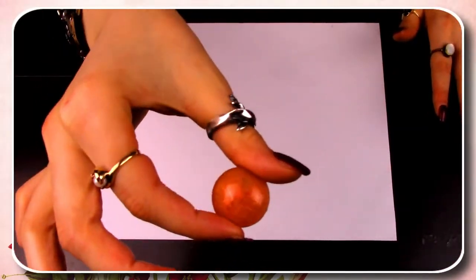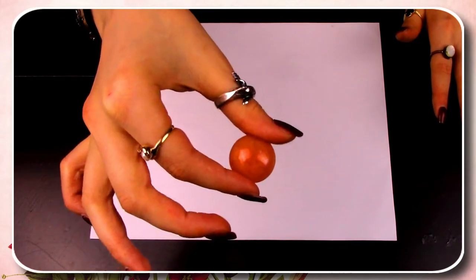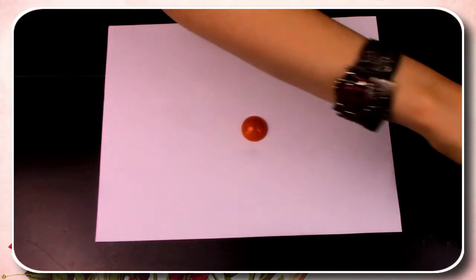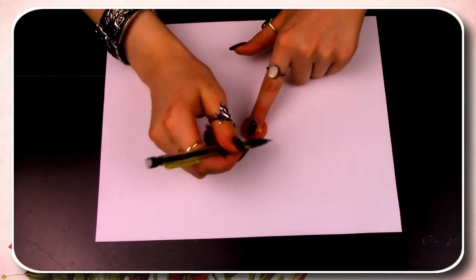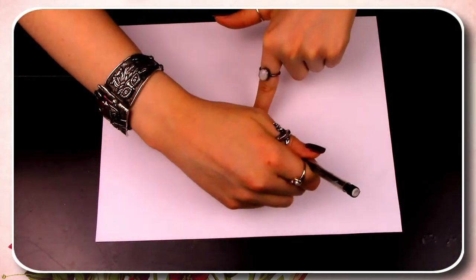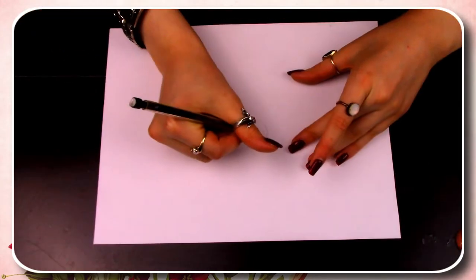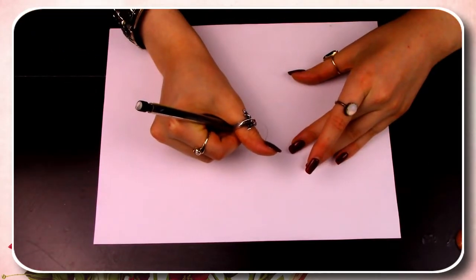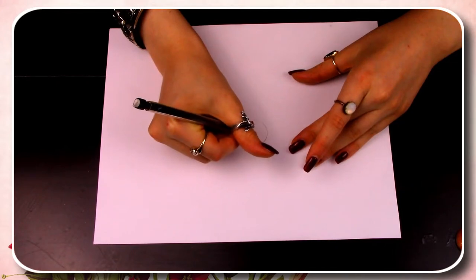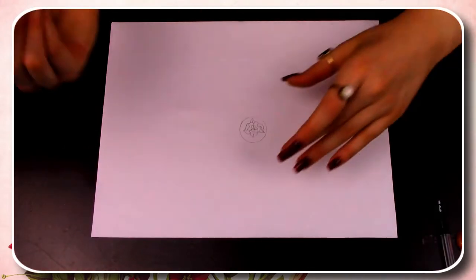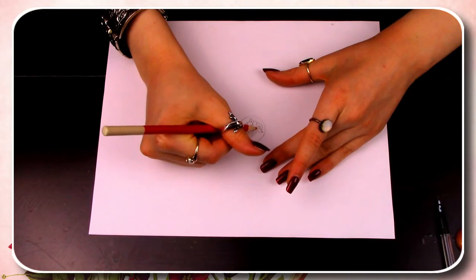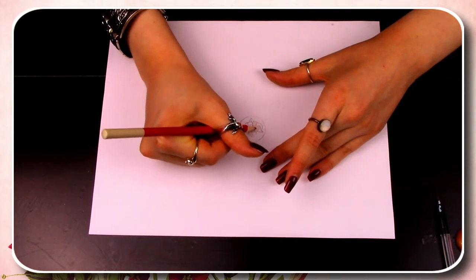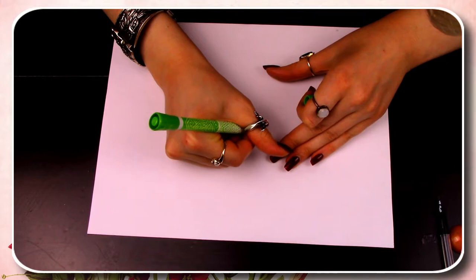First thing you want to do is find something the same size as the sphere that you're going to make and trace it on a piece of paper. Next step is to lightly draw out your picture, then lightly color it in with your pencil crayons and go over top with your markers.